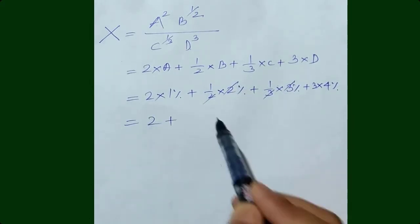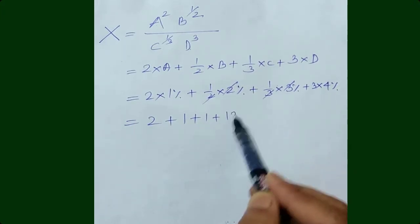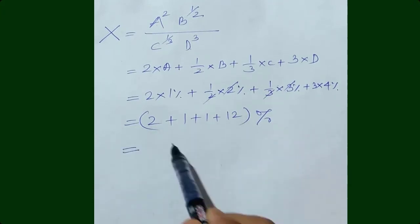Therefore, 2 plus 1 plus 1 plus 12, if you add these things, then it will be 16.